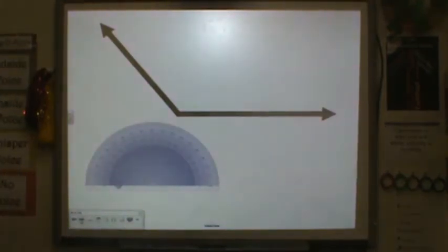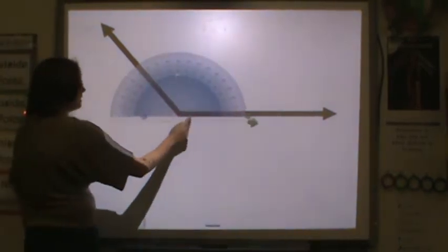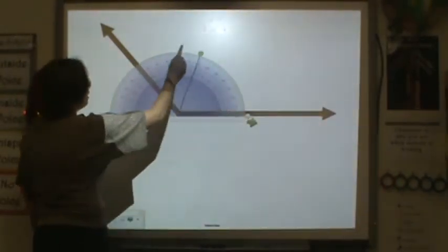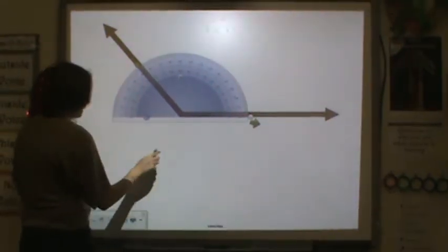So here if I have this angle, I'm going to first line up my protractor. Then what I'm going to do is I'm going to see how wide it is. Now this angle is an obtuse angle.